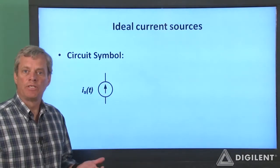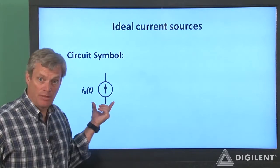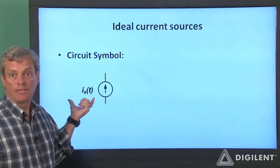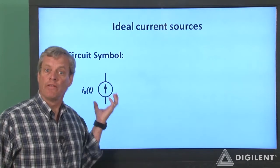Ideal current sources are represented on circuit schematics by this symbol. The direction of the current and the value of the current, either a constant or a function of time, are shown on the diagram.